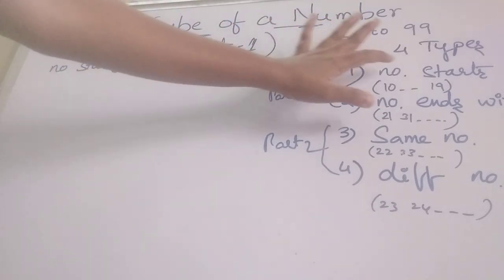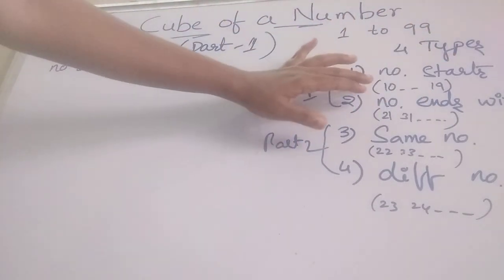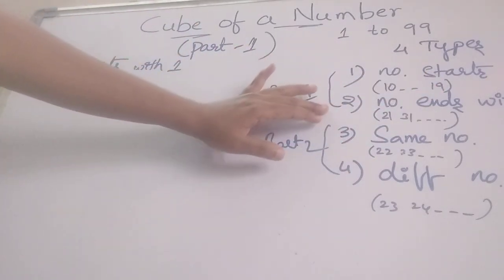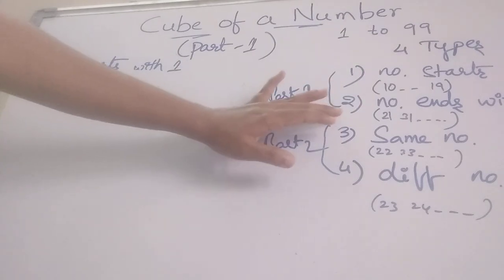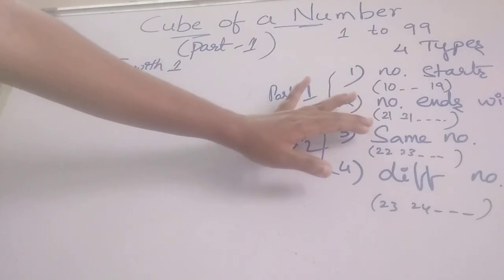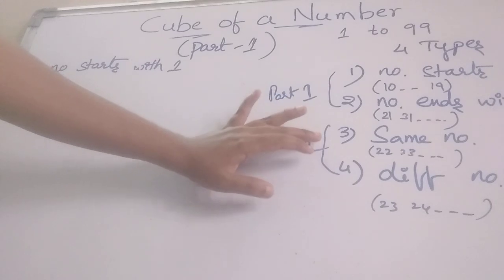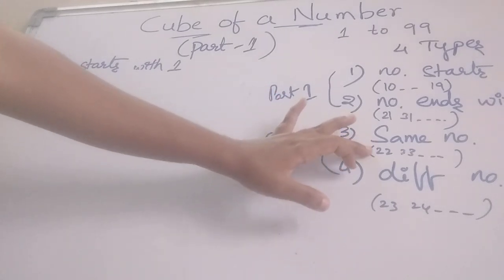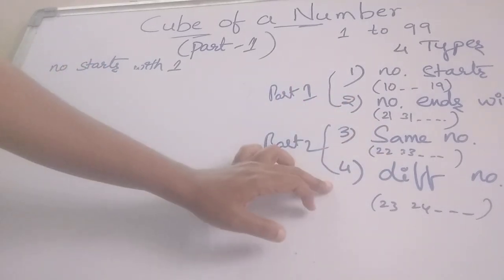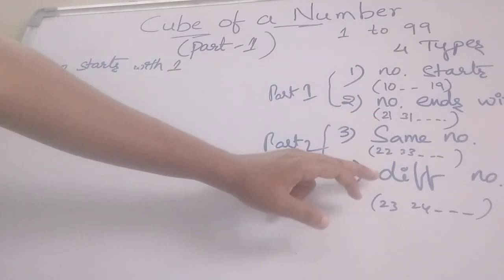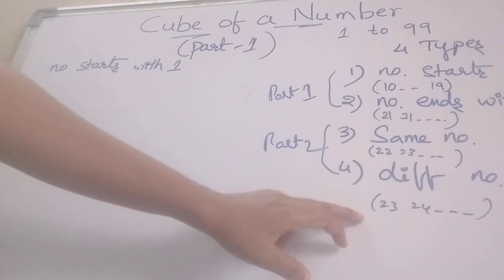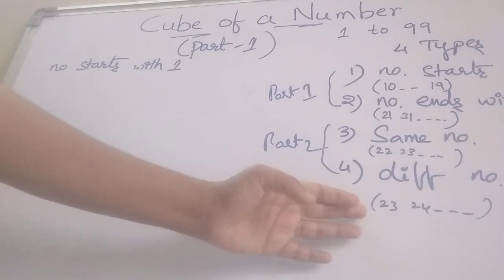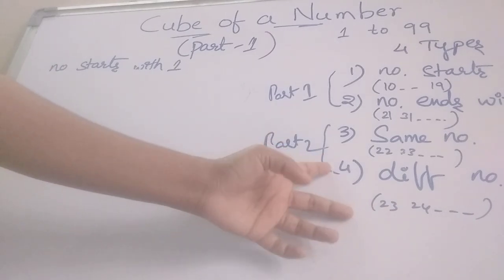First case: the number starts with 1. Those numbers are 10, 11, 12 — from 10 to 19. Second case: the number ends with 1. Those numbers are 21, 31, 41, like this. Third case: same numbers — that is 22, 33, 44, like this. Fourth case: different numbers. All the other numbers come here, like 23, 24, 25, 26 — all these numbers come to this fourth case.